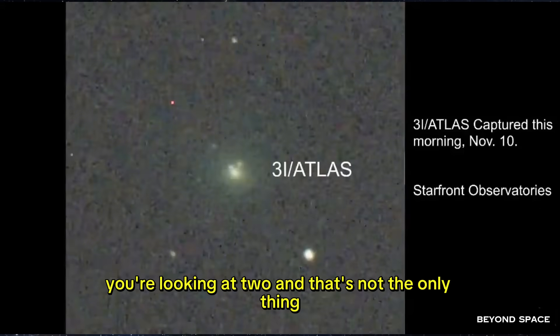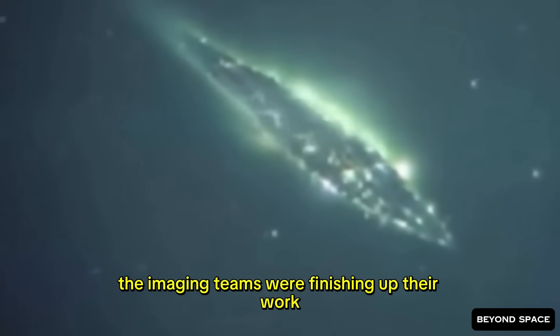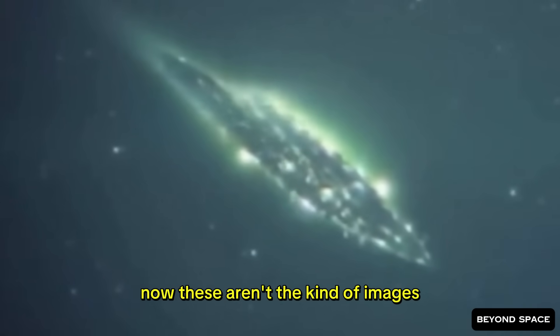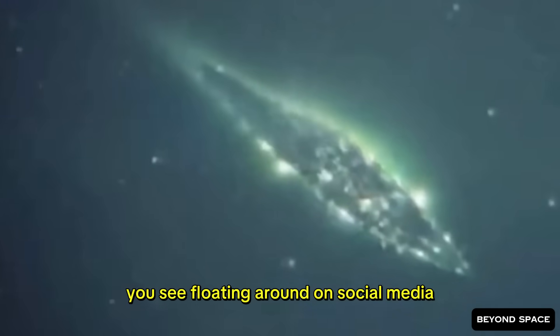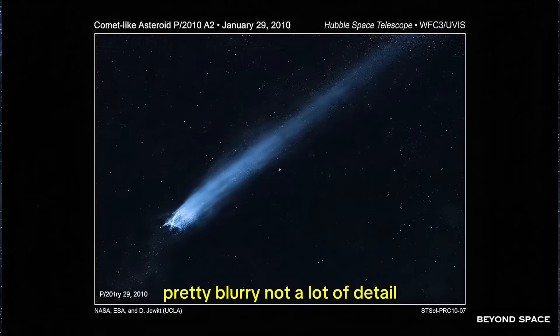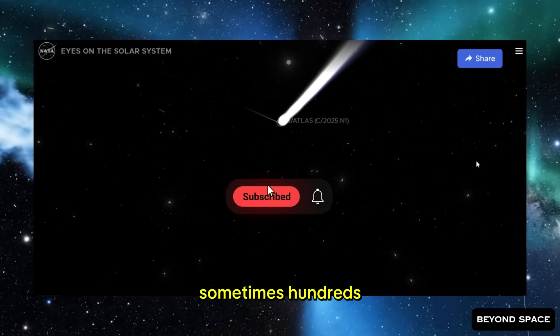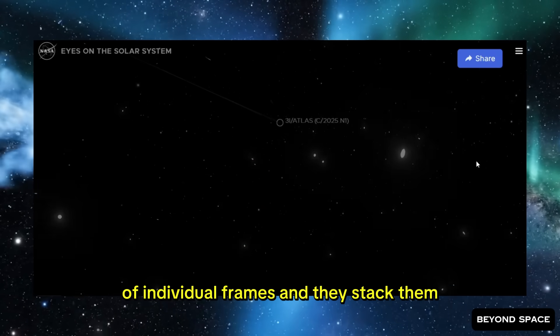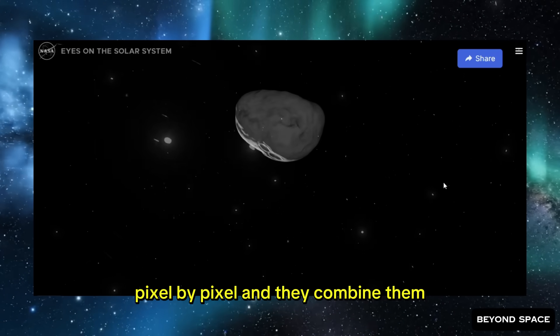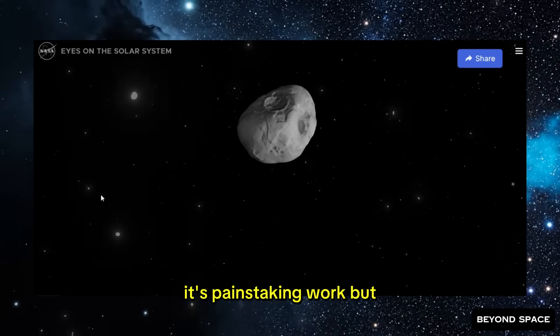At the same time this light curve data was coming in, the imaging teams were finishing up their work on a fresh batch of high-resolution images. These aren't the kind of images you see floating around on social media. What these teams do is they take dozens, sometimes hundreds of individual frames, and they stack them. They align them perfectly, pixel by pixel, and they combine them to pull out every bit of signal they can. It's painstaking work, but it lets you see things that would otherwise be invisible.